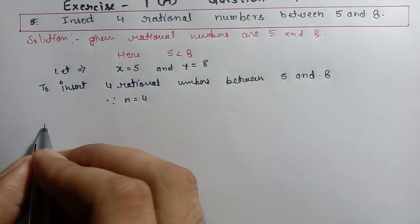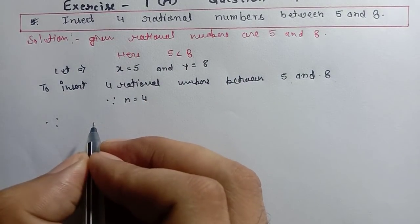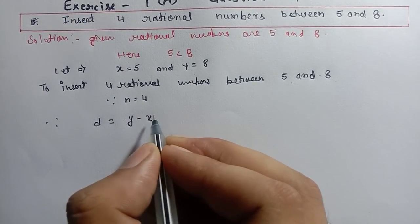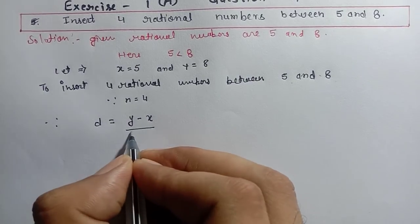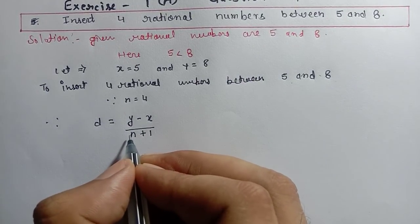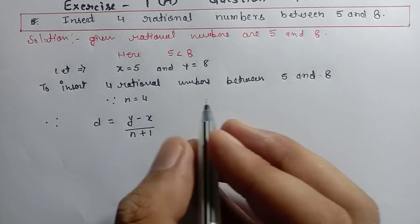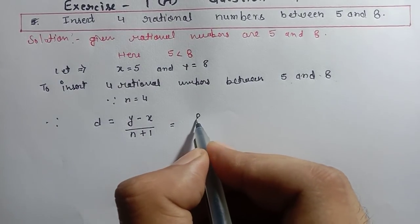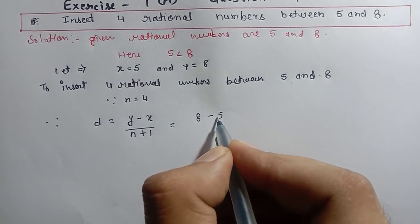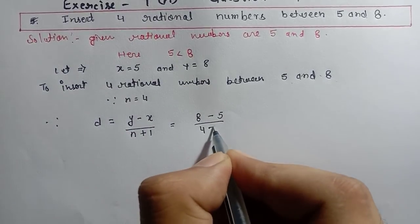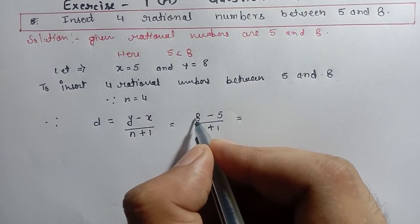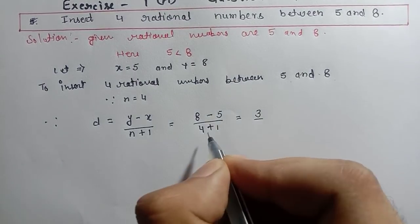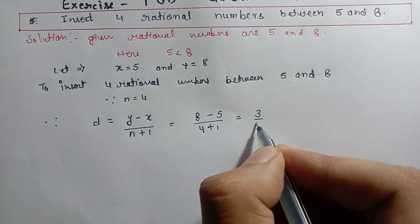Now the formula is: d equals to (y minus x) divided by (n plus 1). We find as many rational numbers as n, and we add 1 to n. So y is 8, x is 5, n is 4, and n plus 1 is 5. Eight minus 5 is 3, and 4 plus 1 is 5, so d equals 3 by 5.